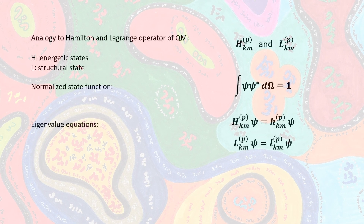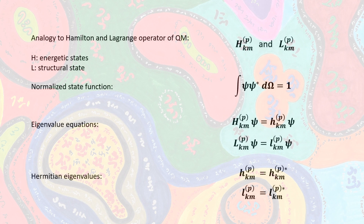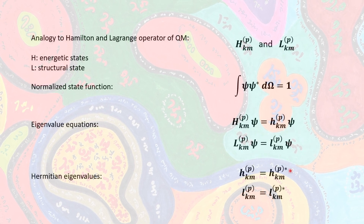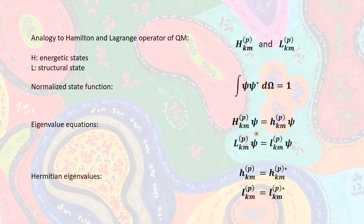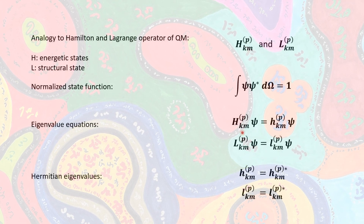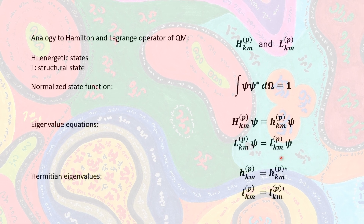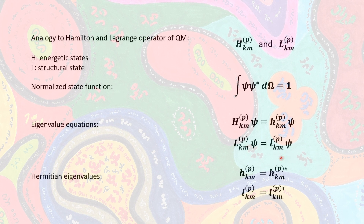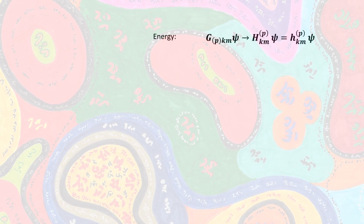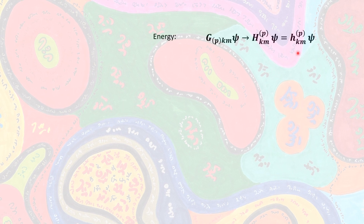With these operators we get two eigenvalue equations: the operator acting on the psi state function, where lowercase h and L are the Hermitian eigenvalues of the linear operators. In quantum theory we would use the Bra-ket or Dirac notation, but I'm not using it here for a specific reason that will become obvious when we interpret the outcome in the next video. We can now identify these eigenvalue equations with our previous findings: when approaching the microcosmos from the macrocosmic states of spacetime, the product of the g's with the psi's can be identified with the eigenvalue equation for the energetic state.